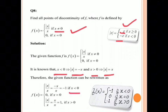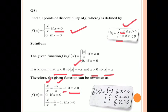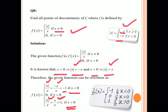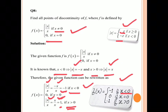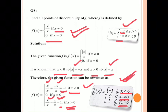We substitute these values into the function. If x is less than 0, mod x = −x, so f(x) = −x/x = −1. If x is greater than 0, mod x = x, so f(x) = x/x = 1. If x equals 0, f(x) = 0. So f(x) = −1 for x < 0, f(x) = 0 for x = 0, and f(x) = 1 for x > 0.